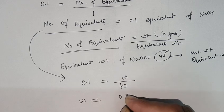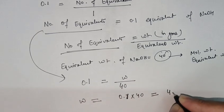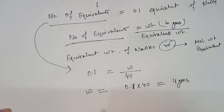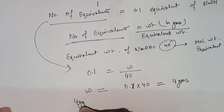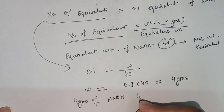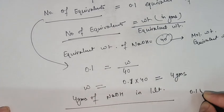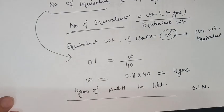How much weight of NaOH is required? 0.1 times 40, that means 4 grams. So we need to dissolve 4 grams of NaOH in 1 liter of water to prepare 0.1 Normal NaOH solution.